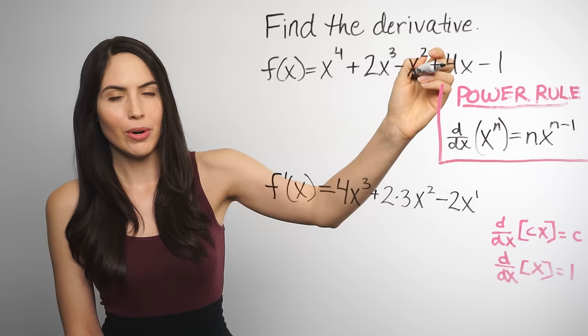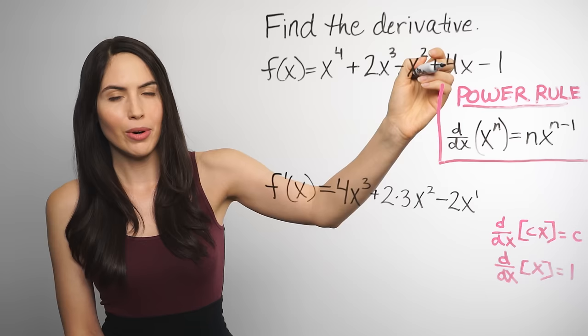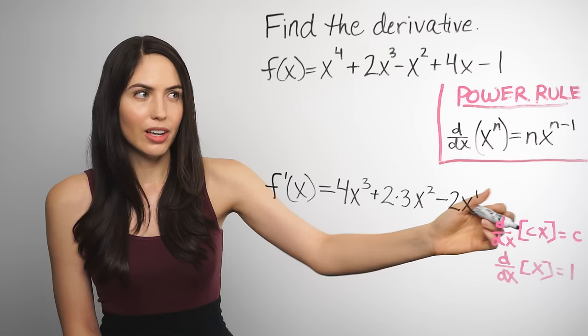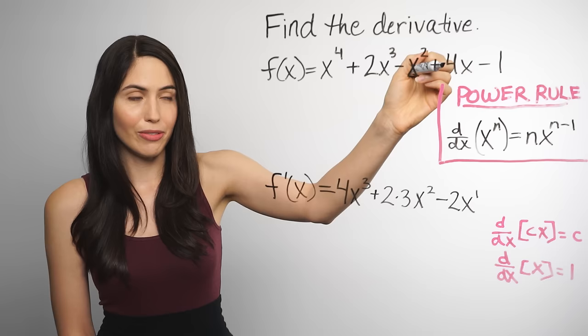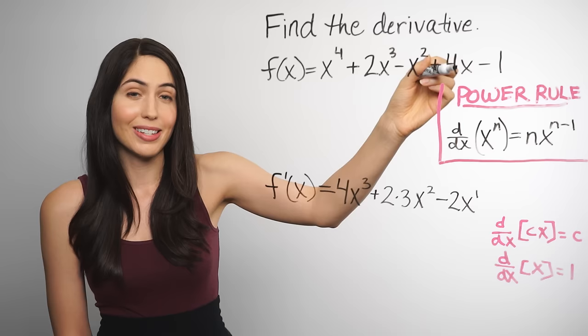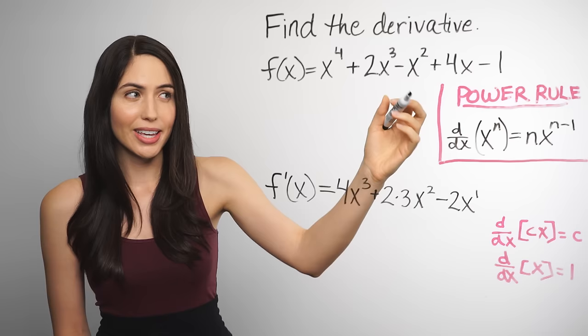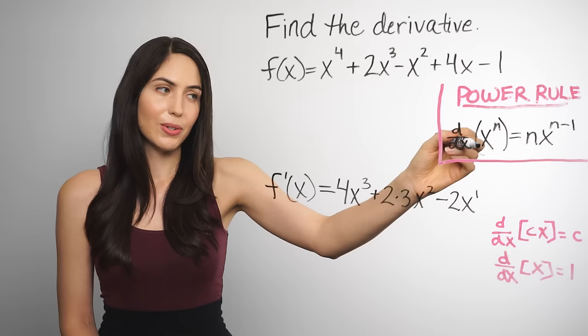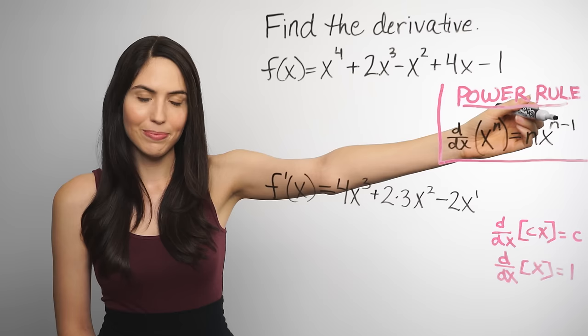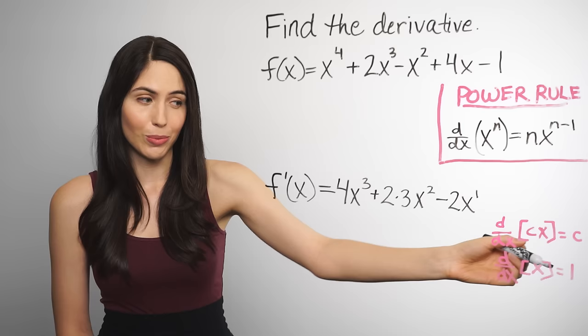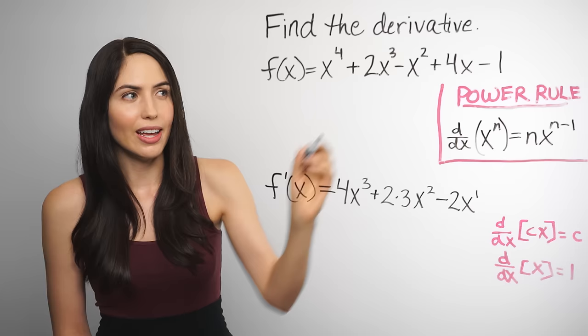Look at this next term: plus 4x. Anytime you have a number times x — 4x, 2x, 10x — the derivative of that term will just be the number. So the derivative of this will just be 4. You can think of this as a separate rule: the derivative of a number times x is just that number. Or you can think of it as the constant multiple rule — keep the 4 and take the derivative of x. The derivative of x is 1, because x is technically x to the first power. Using the power rule on x to the 1, you get 1 times x to the 0, and x to the 0 is 1, so you have 1 times 1, which is 1. The derivative of this term is 4.